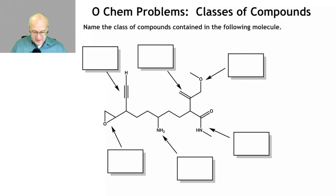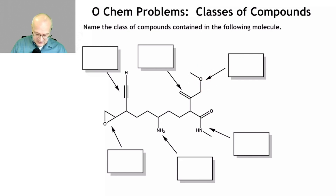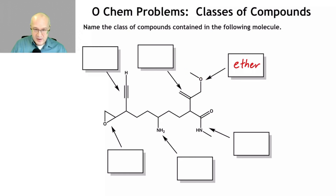First question: name the classes of compounds contained in the following molecule. So let's start top right for no better reason than it's there. The arrow is pointing here at this group right there. This is ether. How do I know? You have an oxygen flanked on either side by carbon and not carbonyl. So that's ether.